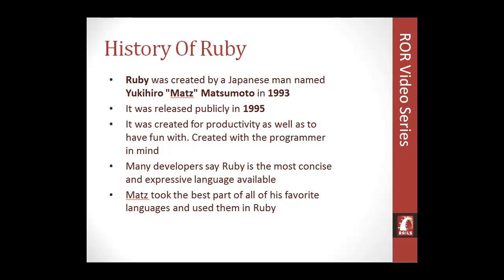What Matz did was take the best aspects of all the languages he was using at the time, and kind of meshed them all together and called it Ruby. He took certain elements from Java, a lot of elements from Smalltalk, and different parts from different languages.